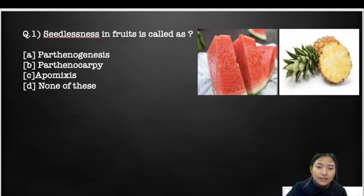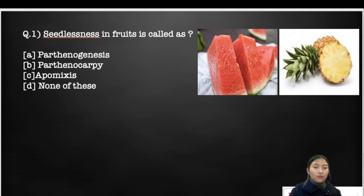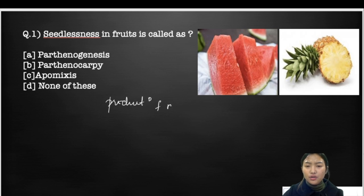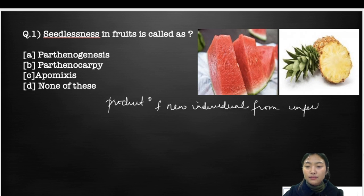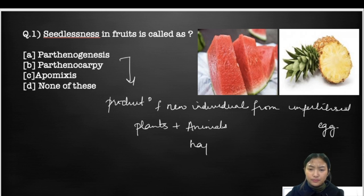Before going to the answer, let's discuss each term properly. This comes under the reproduction of fruits or crops. Parthenogenesis is the process of development of a new individual from an unfertilized ovule or egg — production of a new individual from an unfertilized egg. It may occur in plants as well as animals, and it usually produces a haploid, which prevents sexual reproduction.